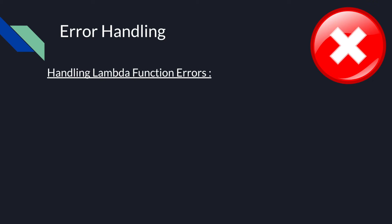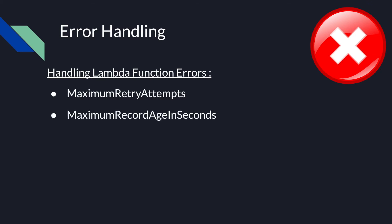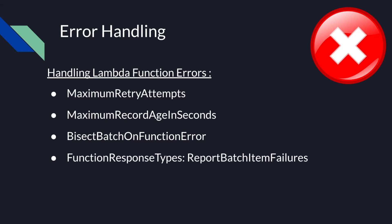Using event source mapping for error handling will allow you to do the following. The first is maximum retry attempts, which allows you to set the maximum number of retry attempts for Lambda. The second is maximum record age in seconds, which allows you to set the maximum age of records that Lambda will retry and ignore ones that are getting old. The third is bisect batch on function error, which will recursively split the bad batch and try to process each half separately. The fourth is function response types with the report batch item failures value, which returns a partial success for the part of the batch processed successfully. And the last is destination config, which allows you to define an on-failure destination for records that cannot be processed after all the retries.